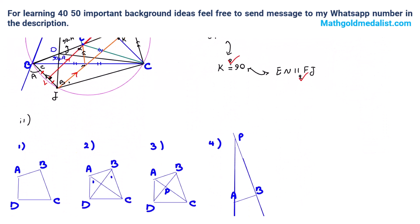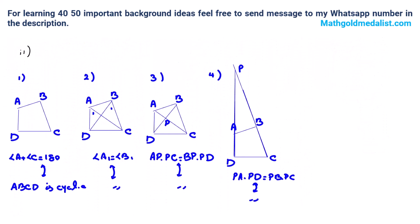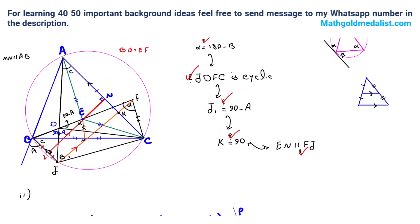Let's summarize the ideas we used: cyclic quadrilateral properties, symmetry with respect to the perpendicular bisector of AC, the midpoint theorem — which is a special case provable by similar triangles where the ratio condition is equivalent to parallel lines — and angle chasing throughout.